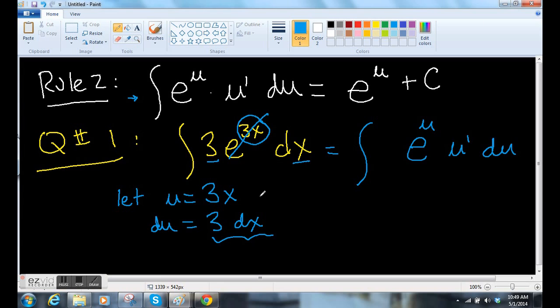Remember, because the 3du, that's the derivative. So now we can use this rule and say, well, all of that is equal to e to the u plus a constant. But e to the u, we can't leave it like that. No, we have to plug it back in like this. And we get e to the 3x plus a constant.